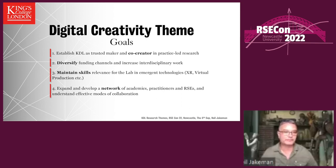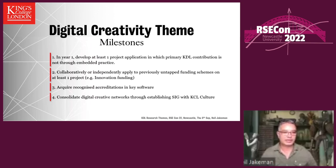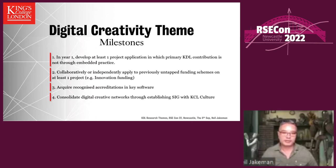The next step from high-level goals is to specify some measure of success — fairly modest measures at this stage, but with some demonstrable targets. For example: year one — develop a project application in which the KDL contribution is not through our normal embedded practice; apply to at least one funding scheme we've never used before; acquire recognized accreditations in key pieces of software; and with help from King's Culture colleagues, consolidate networks through establishing a new special interest group. We plan to review progression of this theme on a quarterly basis, aligned with our quarterly planning schedule when we're making major strategic decisions.